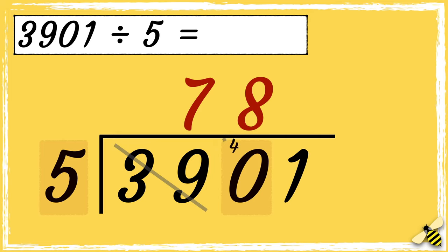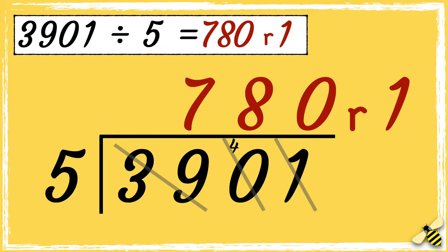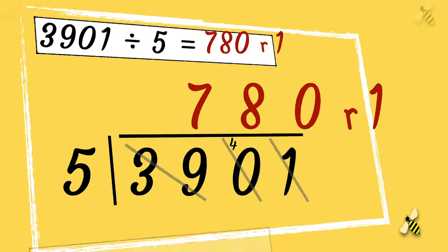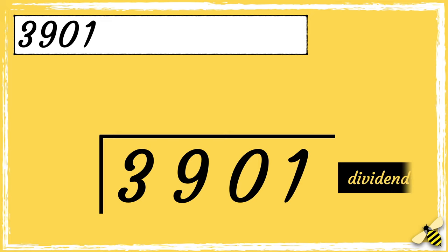So now we work out how many fives go into 40. Five goes into 40 eight times. So now we can work out how many fives go into 1. Five goes into 1 zero times, so we have 1 left over, which is our remainder. So the answer is 780 with a remainder of 1.